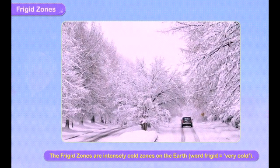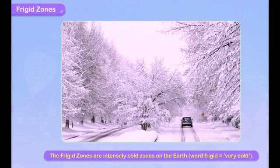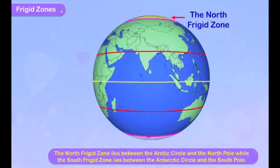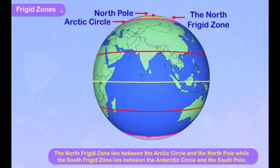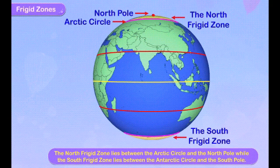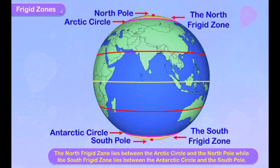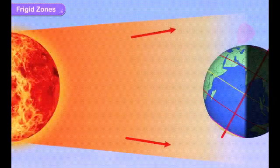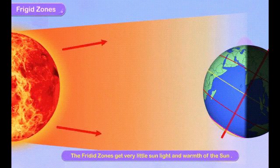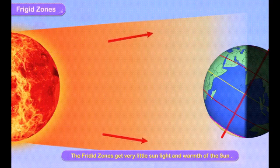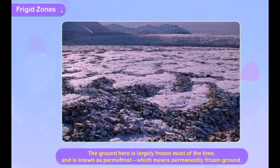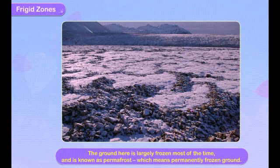The frigid zones are the coldest zones on the earth — the word 'frigid' means very cold. The north frigid zone lies from the arctic circle to the north pole, and the south frigid zone lies from the antarctic circle to the south pole. The frigid zone receives extremely slanted rays of the sun and therefore receives very little sunlight and warmth. The ground here is largely frozen most of the time and is known as permafrost, which means permanently frozen ground.